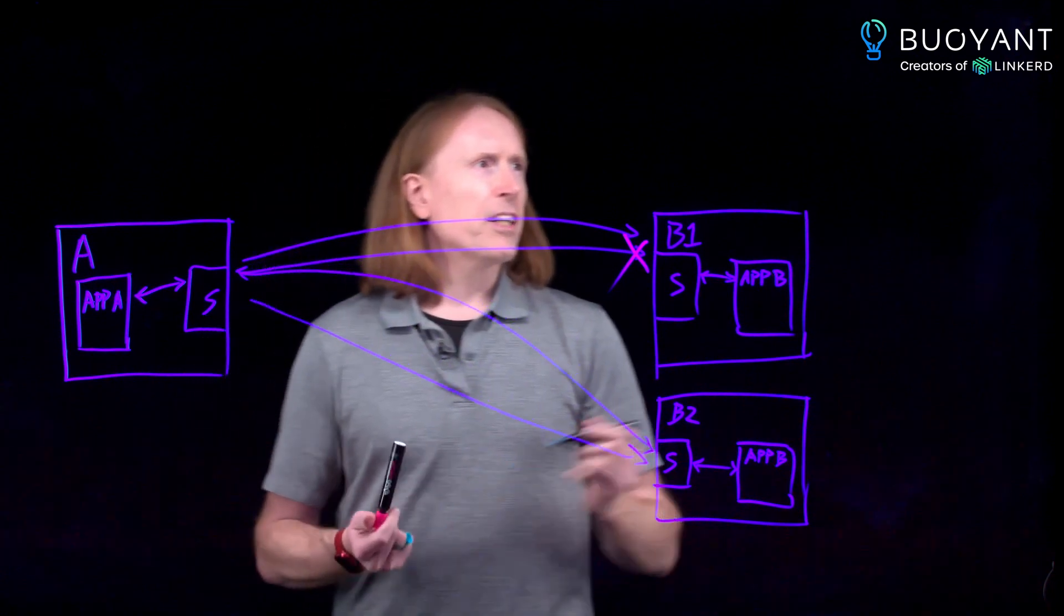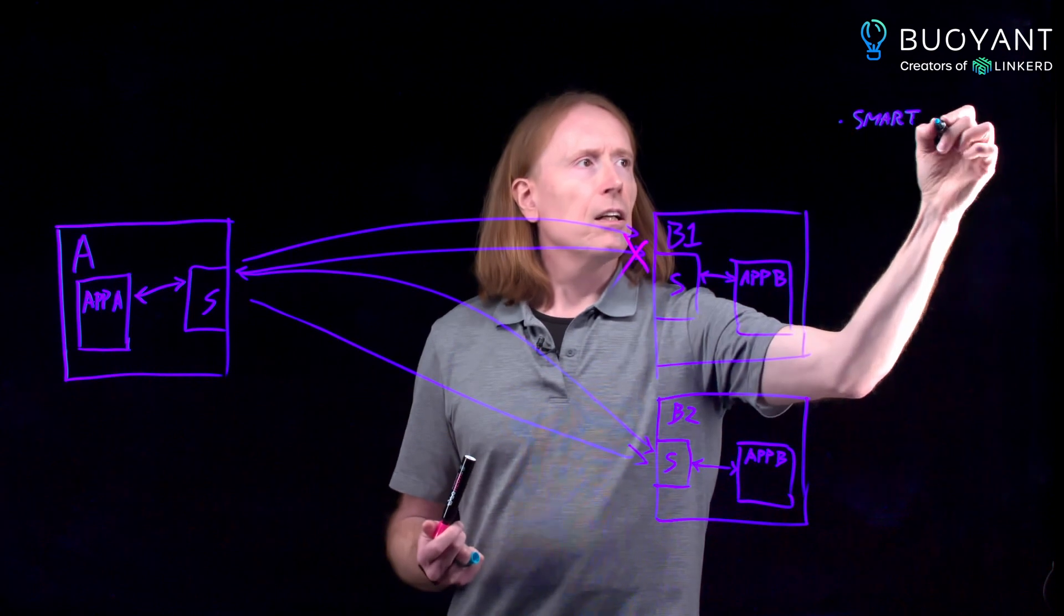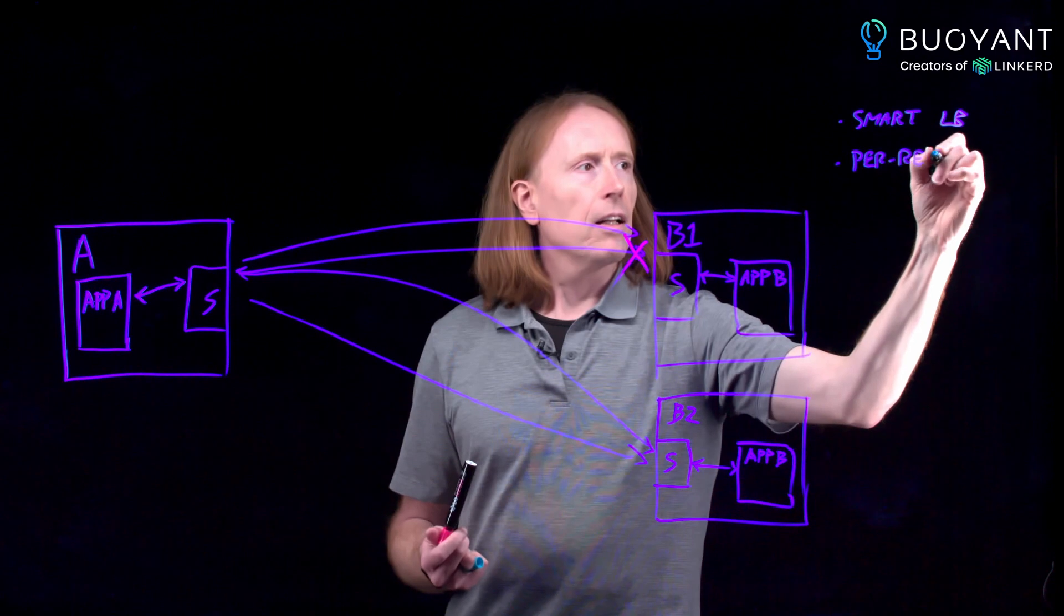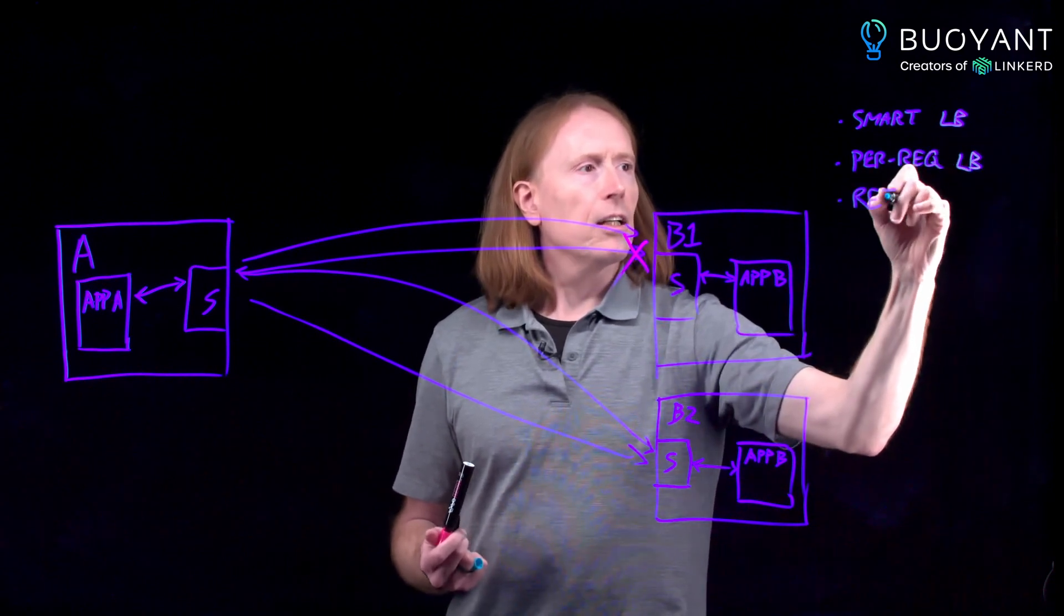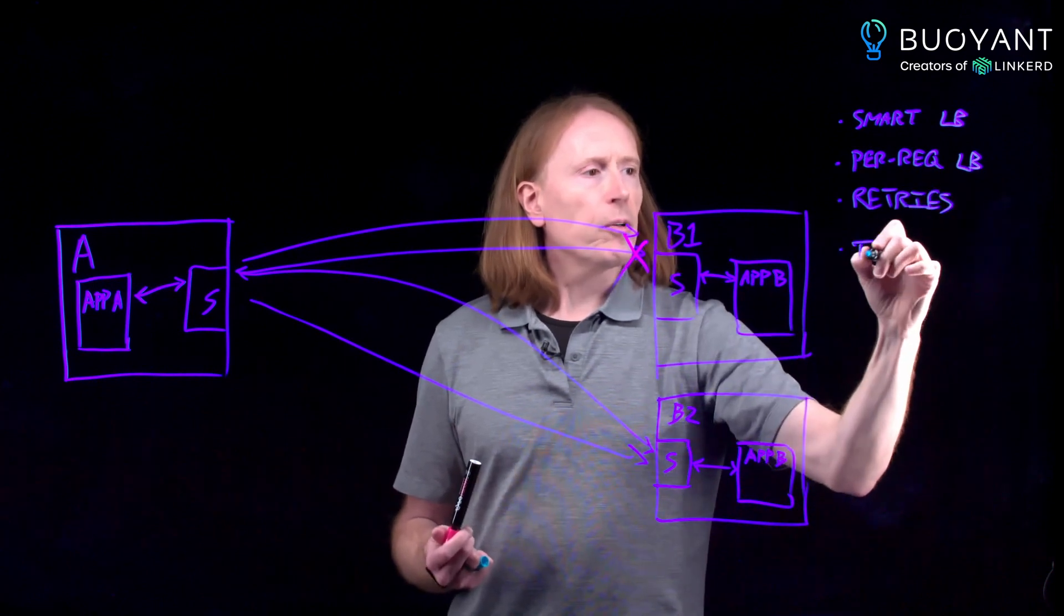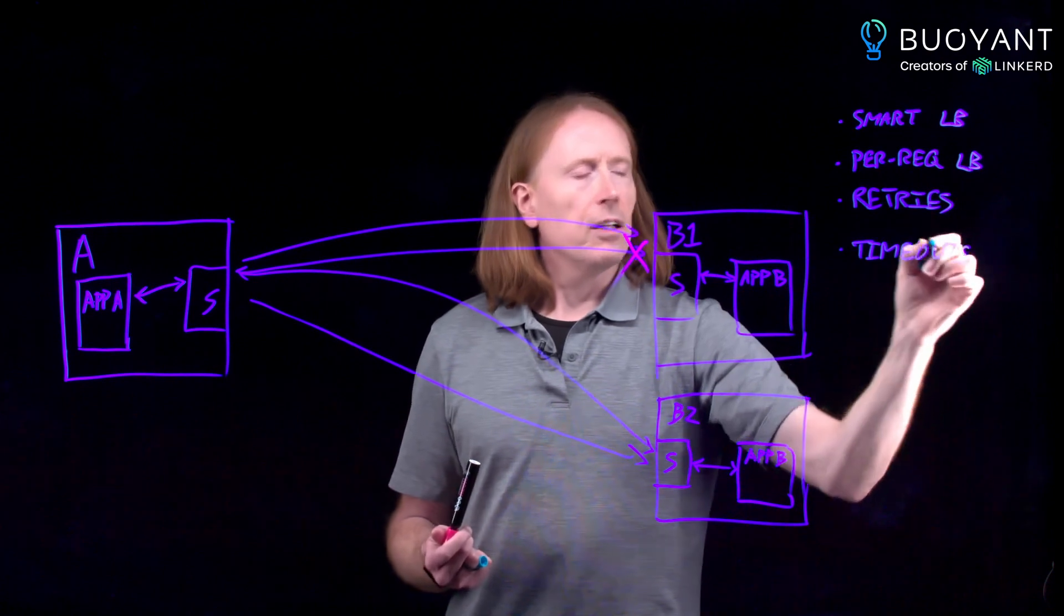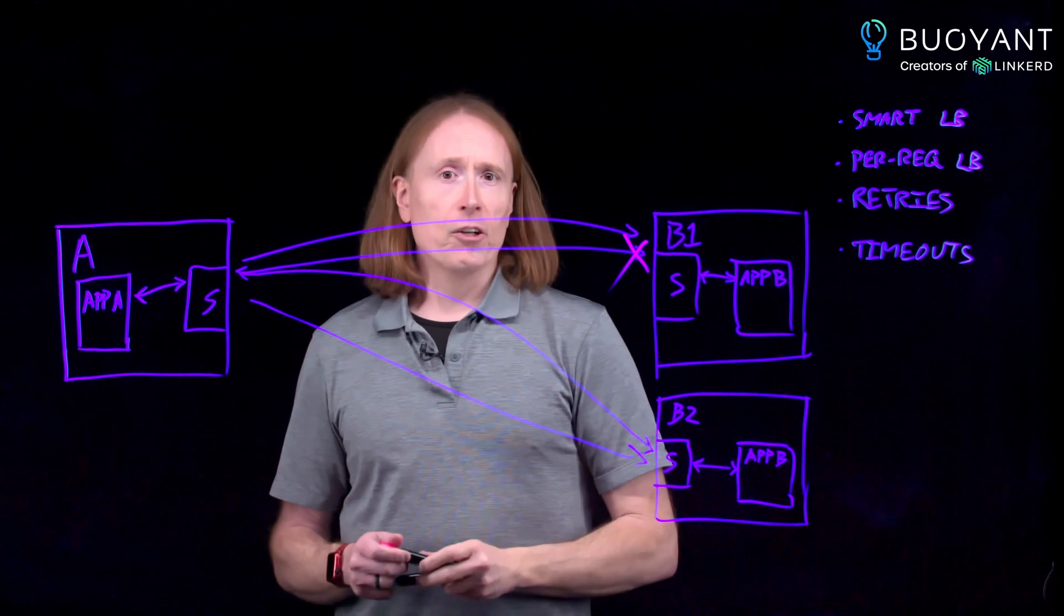So, some really simple things here. We have much smarter load balancing. We have per-request load balancing. We can do automatic retries. And we can end up doing timeouts. And all of these are things that can happen down at the layer of the platform without needing any changes to your application at all.